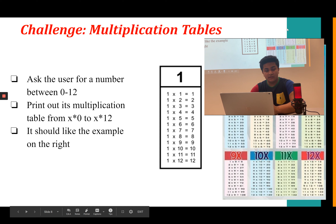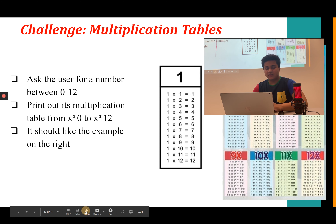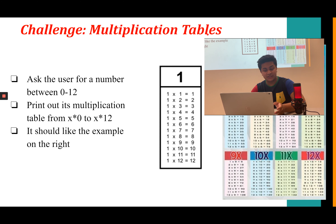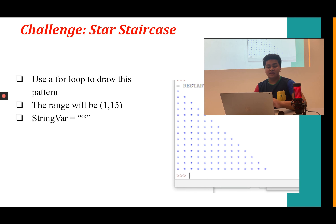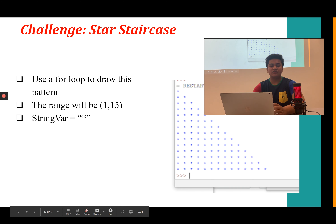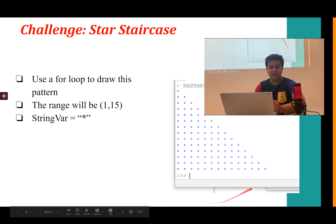Challenge — Multiplication Tables: ask the user for a number between 0 and 12 and print its multiplication table from x×0 to x×12. This challenge is highlighted in red — it's a progress check. Pause the video, attempt it yourself, and submit it for review to move on. Similarly, the Star Staircase challenge is also a progress check: use a for loop in range 1 to 15 to draw a star pattern. A helpful hint: use a string variable equal to the asterisk and multiply it to produce the staircase.